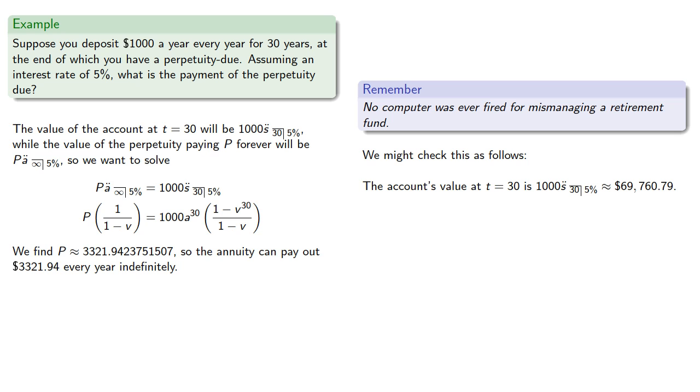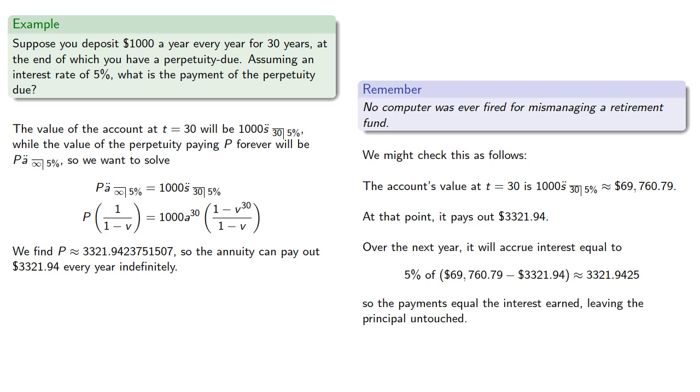At that point, suppose it pays out $3,321.94. Over the next year, it will accrue interest equal to 5% of $69,760.79 minus the $3,321.94 payment, and that amount equals the payment. So the payments equal the interest earned, leaving the principal untouched.